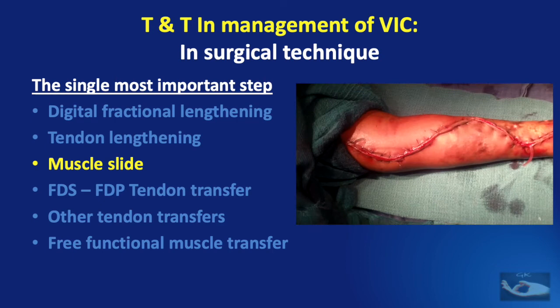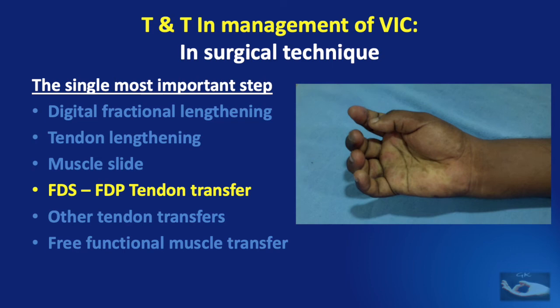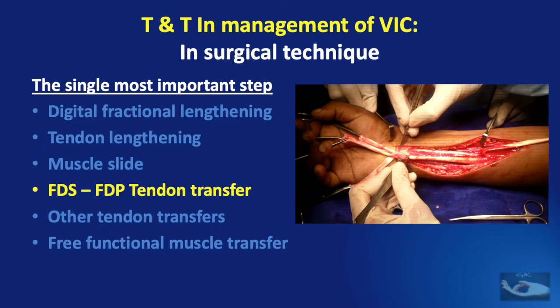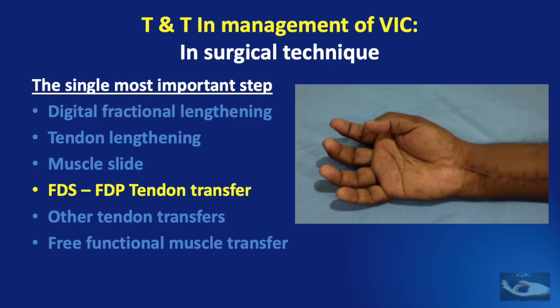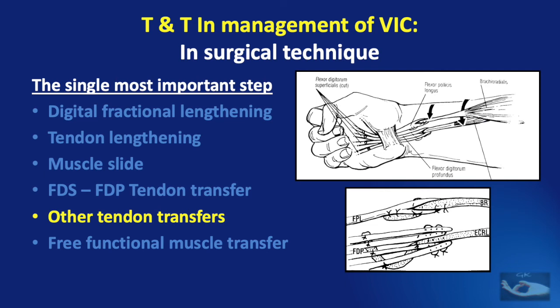For the FDS to FDP transfer, the important points are that the FDS as donor should be divided distally, the FDP as recipient should be divided proximally, and tension adjustment to achieve the flexion cascade must be perfect. When the extensor muscles are intact, the extensor tendons can be transferred to the flexor side. The commonest procedure is transfer of the extensor carpi radialis longus to the flexor digitorum profundus and the brachioradialis to the flexor pollicis longus, using a Pulvertaft weave for a strong repair.